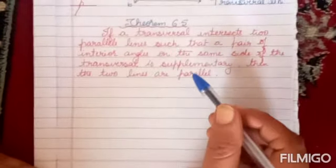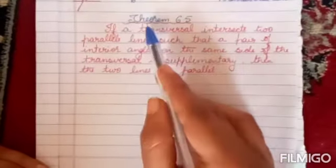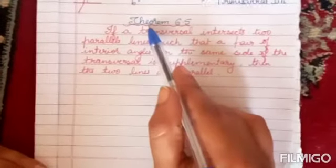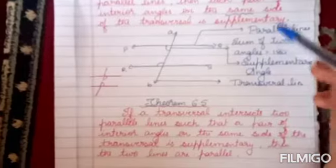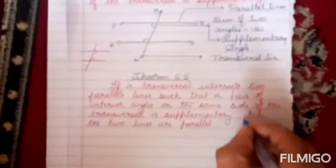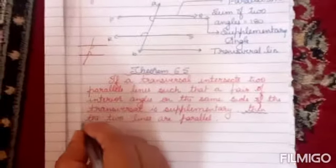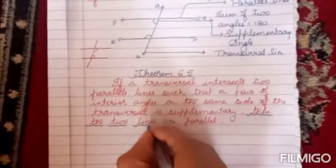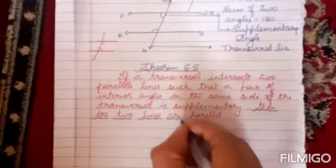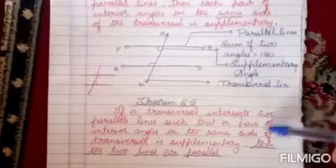Which lesson? Lines and Angles. Now Theorem 6.5, that is Theorem 5. Here is Theorem 4. What is the difference between Theorem 4 and Theorem 5? The only difference is the last sentence — that last sentence is added. That is the difference between these two theorems; the rest is the same as Theorem 4.